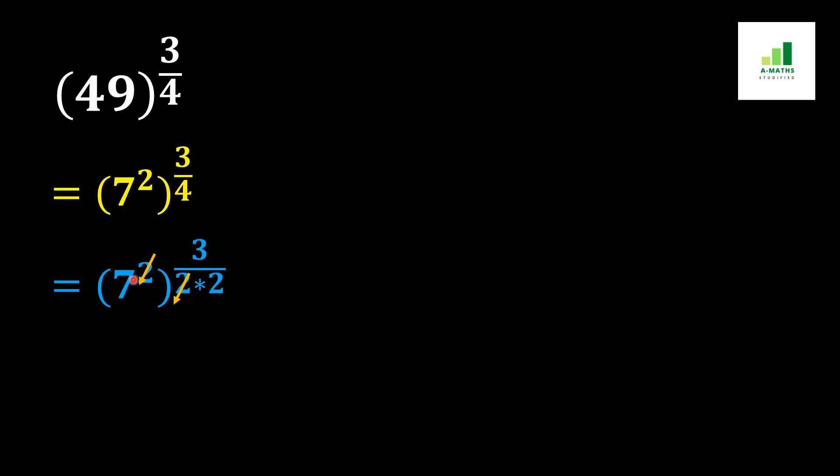Because both are in multiplication, this 2 is in multiplication with this 7 and this 2 is in division with this 7, so both values cancel out and we get 7 to the power 3 over 2. Now we can write this 3 as 2 plus 1.